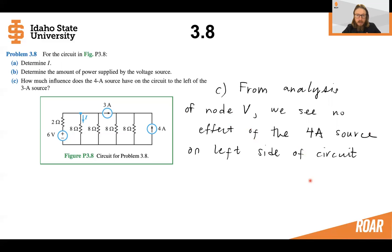Now in part C, we analyzed node V. So we can see that there was actually no effect of the four amp source on this left side of the circuit. All right, thank you, and I will see you in the next video. Goodbye.